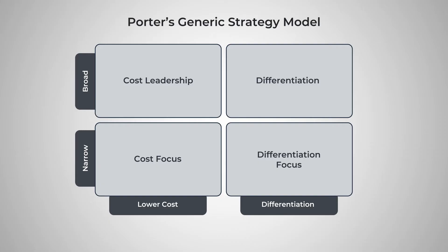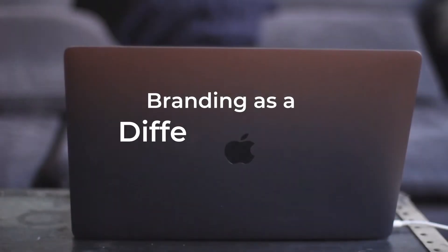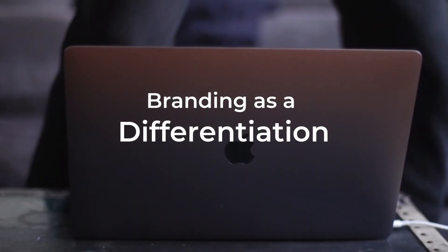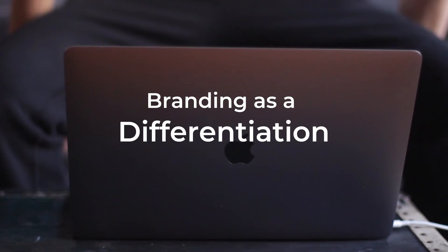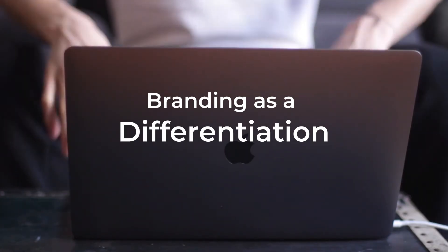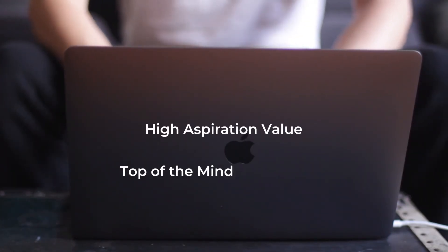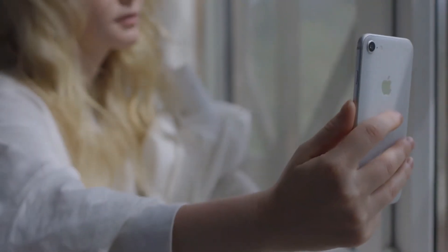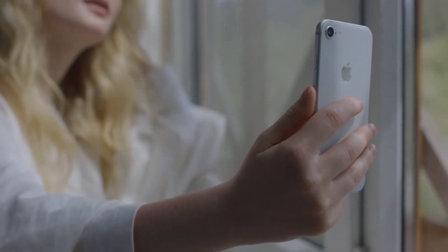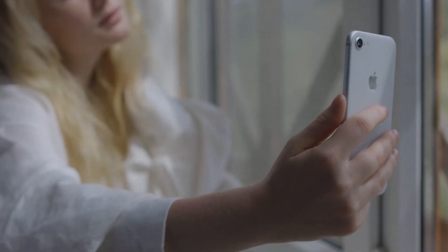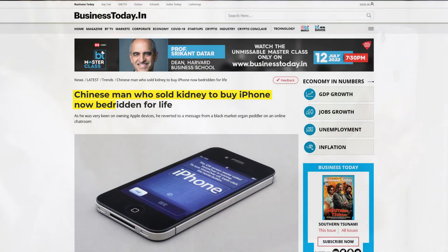In the case of Apple, the tech giant follows the differentiation strategy, where it operates on a broad market while focusing on creating a distinct value. The differentiation strategy of Apple is quite apparent in its branding. The company has created a brand image with high aspiration value and top-of-the-mind brand recall. Apple products are one of the most sought-after commodities in the consumer electronics sector, and people have done some really crazy things to get their hands on them, especially the iPhone.